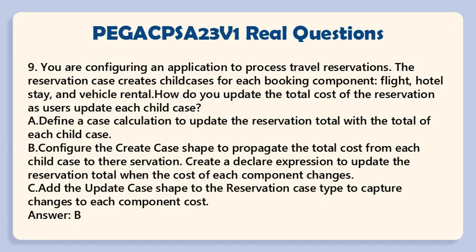Question 9: You are configuring an application to process travel reservations. The reservation case creates child cases for each booking component: flight, hotel stay, and vehicle rental. How do you update the total cost of the reservation as users update each child case? a. Define a case calculation to update the reservation total with the total of each child case. b. Configure the create case shape to propagate the total cost from each child case to their reservation. c. Create a declare expression to update the reservation total when the cost of each component changes. d. Add the update case shape to the reservation case type to capture changes to each component cost. Answer: c.